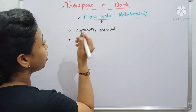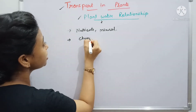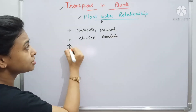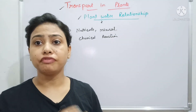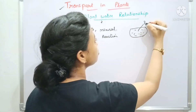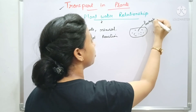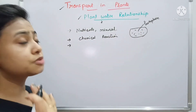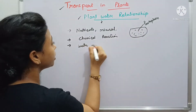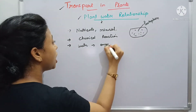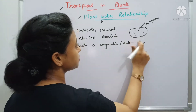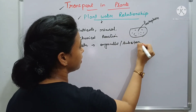Second, water is the medium where all chemical reactions take place. Water also plays an important role in the protoplast of a cell — the protoplasm is completely made up of water, and so many organelles and other substances are embedded within it.